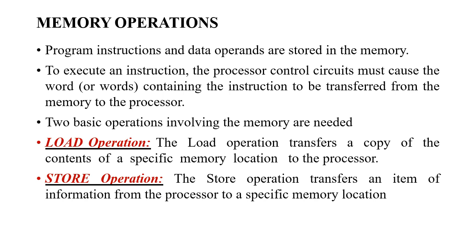Memory is used to store program instructions as well as data. All programs and corresponding data are stored in memory. To execute an instruction, it is necessary for the processor control circuit to transfer the word containing the instruction to the processor. The two basic operations involving memory are the load operation and the store operation. The load operation transfers a copy of the contents of a specific memory location to the processor, whereas the store operation transfers data from the processor into memory.